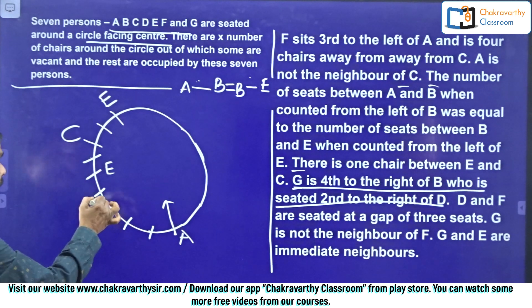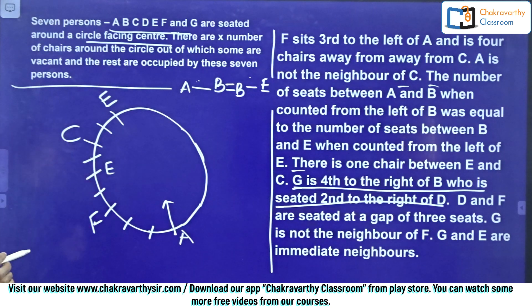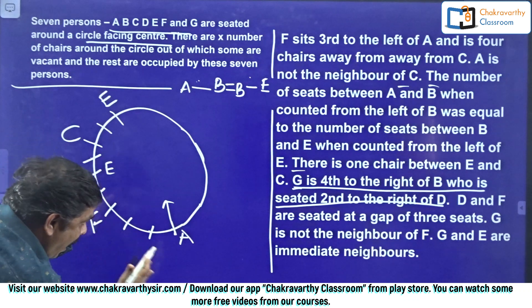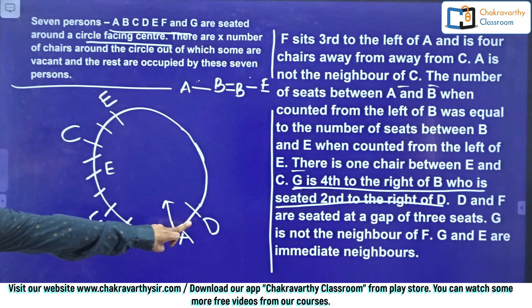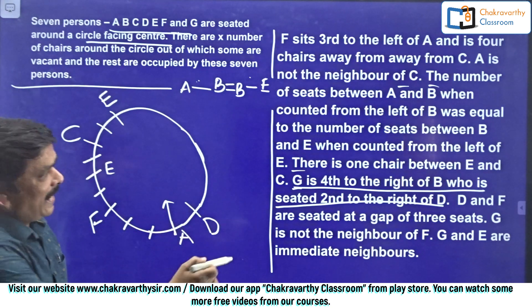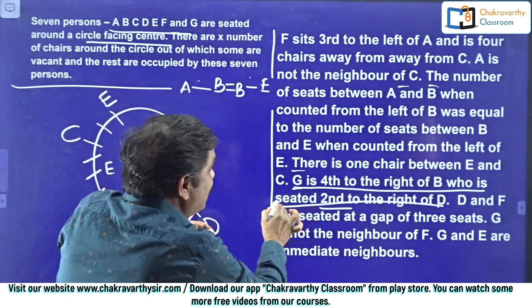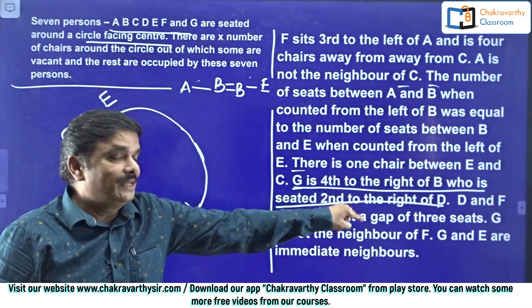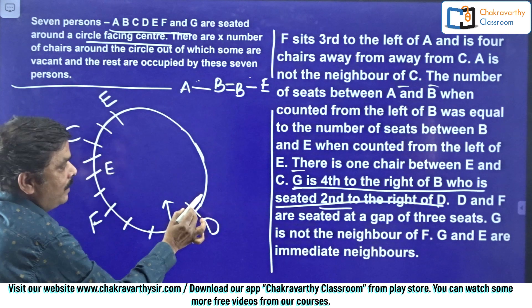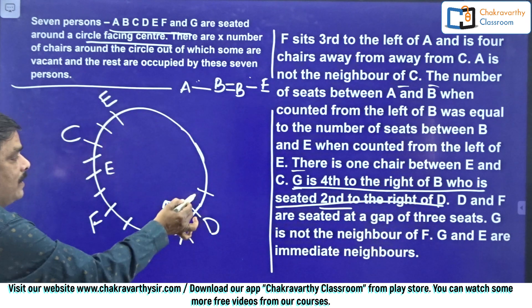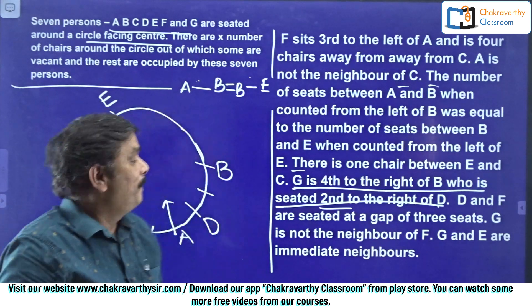When D's place is confirmed, we can use the earlier clue: B is seated second to the right of D. B's place depends on D's, and D's place is already confirmed. To the right side of D: first, second — this place is confirmed for B. This is the way to solve a seating arrangement question. B's place is confirmed.